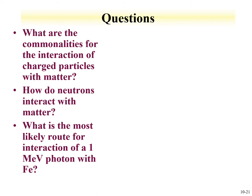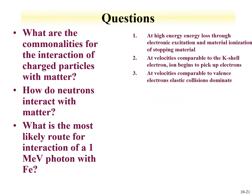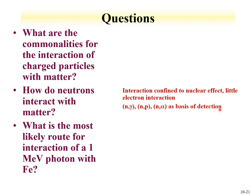Questions you should be able to answer: What are the commonalities of interactions of charged particles with matter? At high energy, loss is primarily through electronic excitation and ionization. At velocities comparable to K-shell electrons, ions begin to pick up electrons. At velocities comparable to valence electrons, elastic collisions dominate. How do neutrons interact with matter? They are primarily confined to nuclear effects with little electronic interaction — n-gamma, n-proton, n-alpha — as the basis of interactions and detection.